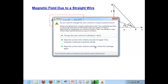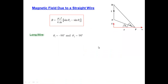One of the more important special cases is when we have a really long straight wire. What we're saying is we want to take the limit as the two ends of the wire go off to infinity. There are no such things as infinite wires, but if the length from point A to point B is large compared to the distance x that locates point P, this approximation using angles of negative 90 and 90 degrees will be a good approximation.